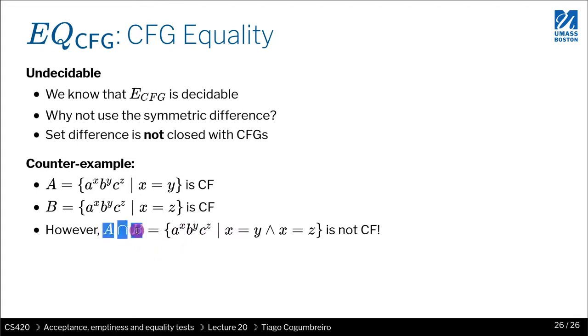So intersection may produce things that are not context-free. So if it's not context-free, that means it's not defined, right? It would produce something that is not a context-free grammar. So you cannot do a decidable intersection.